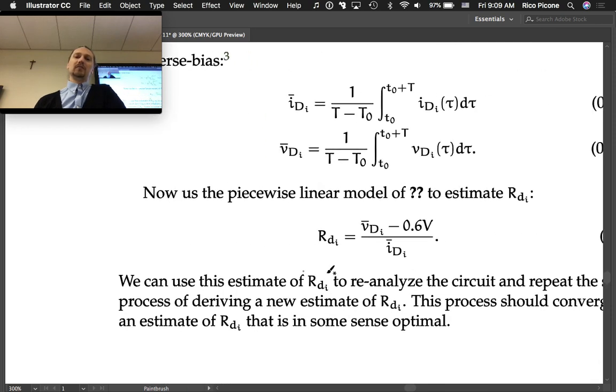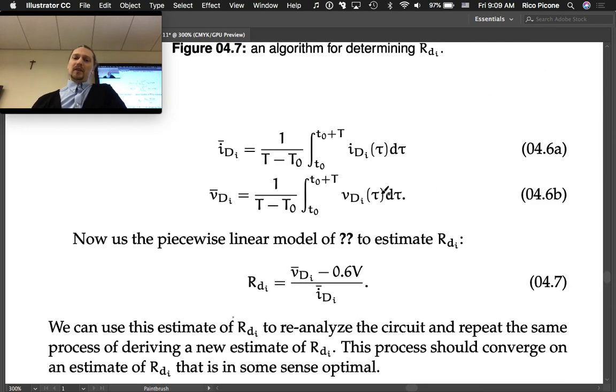Then you can use the linear model to find the resistance. That's equation 4.2. You can find what the resistance would be for those average values.